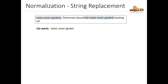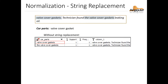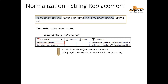Consider this example where we're trying to capture valve cover gasket as a car part entity. The system discovers two very similar instances of the car part, but since they're not exactly the same, it returns them as two separate instances. The reason we get this is because the car part phrase was extracted using the chunk function, so the article 'the' is being captured. But if we want to normalize these, we can use the string replacement post processor to remove the article 'the' from the output. String replacement in general replaces a string with another string, and that other string can also just be nothing, in which case it'll just remove the first string.